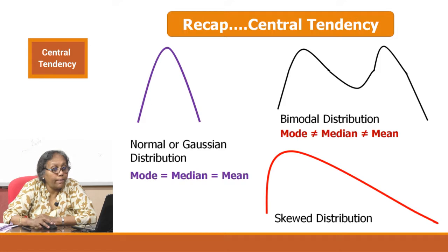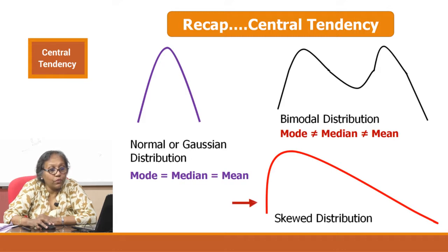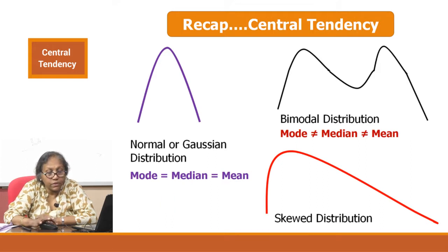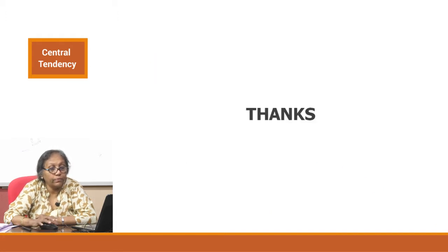To recap: this is the normal or Gaussian distribution, where mean equals median equals mode — the basis for quality control assays. In a skewed distribution, the median is the appropriate central number. In a bimodal distribution, the mode is the central measure. These are the three distributions and their corresponding measures of central tendency that are fundamental to understanding statistical quality control. Thank you.